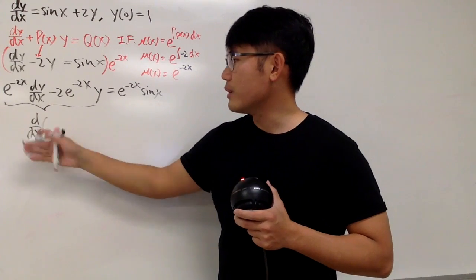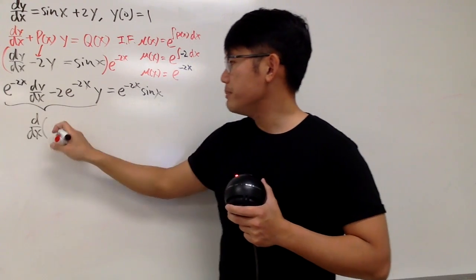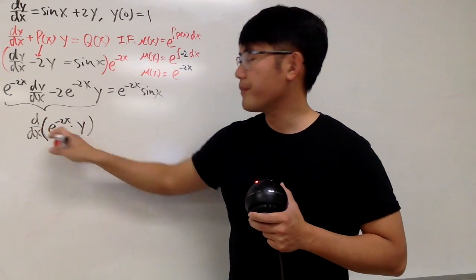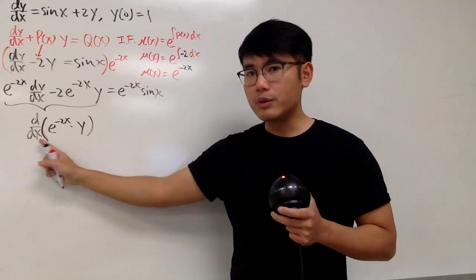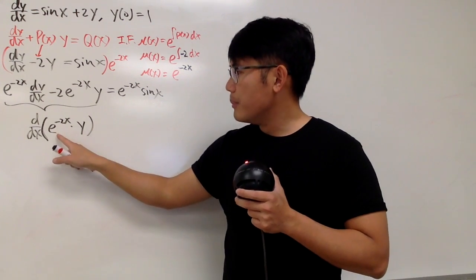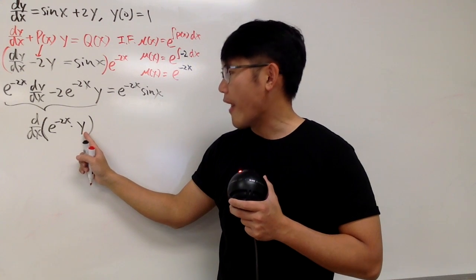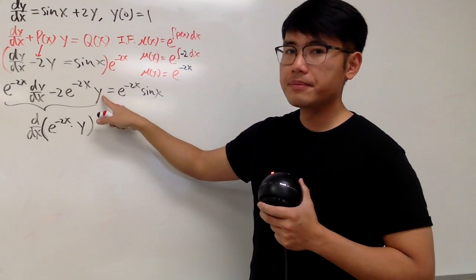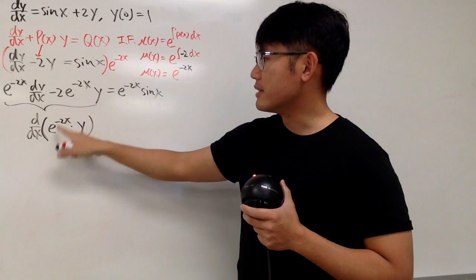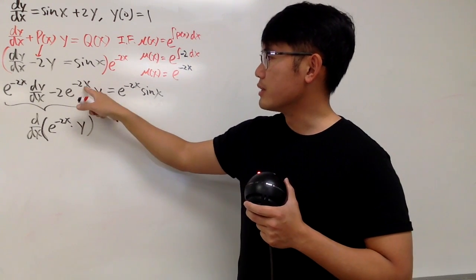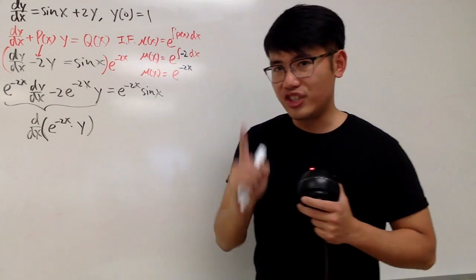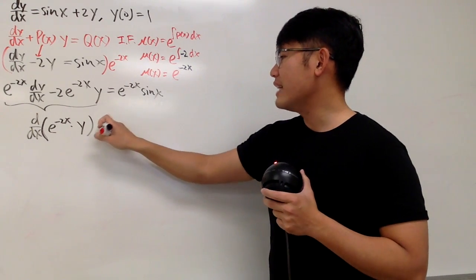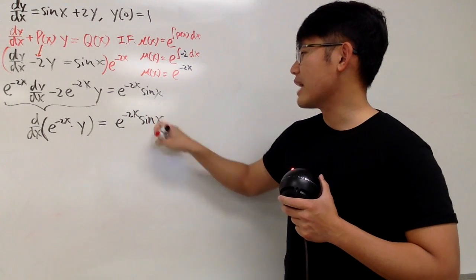So the left-hand side is d/dx of e to the negative 2x times y. We can double-check: if you differentiate this, you keep the first function e to the negative 2x, multiply by the derivative of the second, which is dy/dx, then keep the second function y and multiply by the derivative of the first — derivative of e to the negative 2x is negative 2 times e to the negative 2x by the chain rule. On the right-hand side, this equals e to the negative 2x times sine of x.